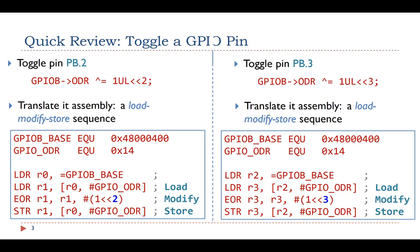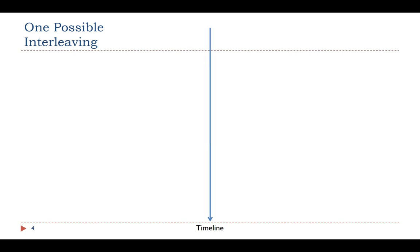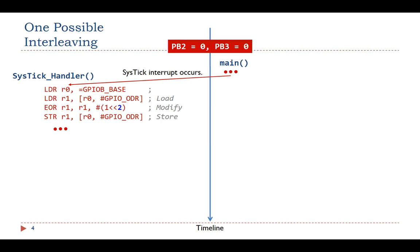The execution of the SysTick interrupt handler and the main function are interleaved over time. The following is one possible interleaving. Suppose the output of both pins is 0 at the beginning. A SysTick interrupt is generated. The processor stops the execution of the main function and runs the SysTick interrupt handler. The interrupt handler toggles PB2.